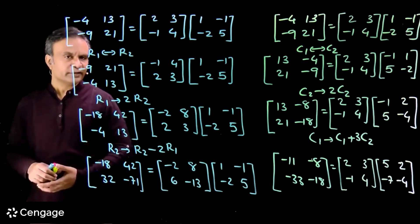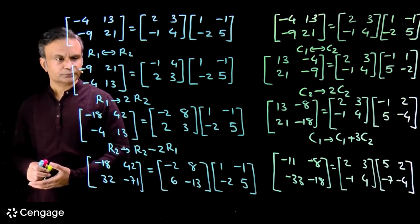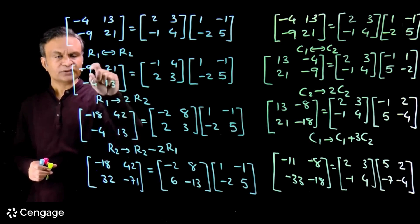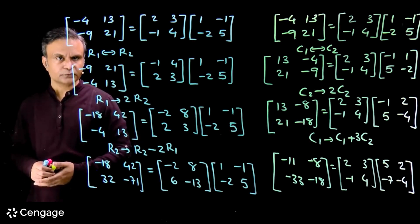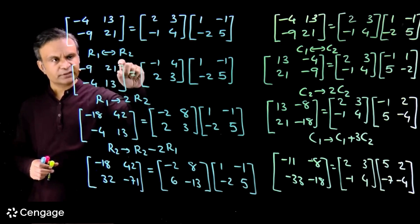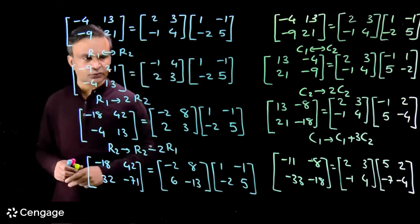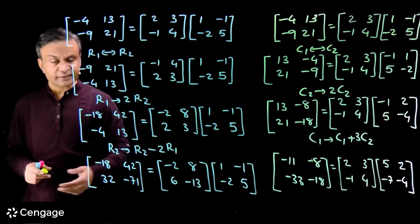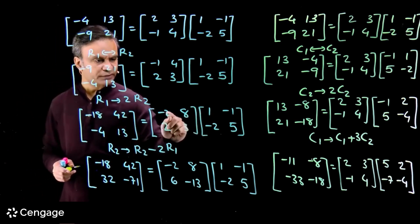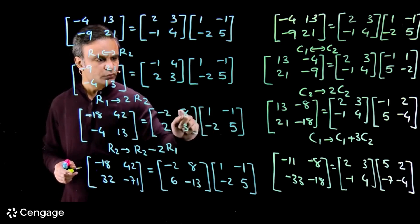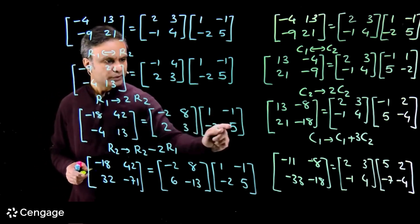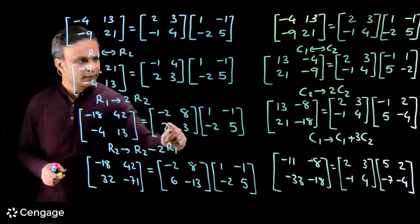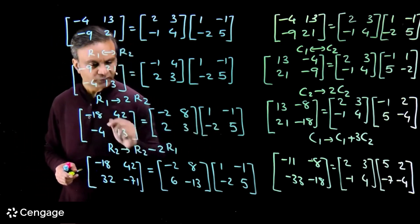Now I am doing one more elementary row transformation — multiplying row 1 by 2 in both matrices simultaneously. So I have this new system. Now again there is one magic: if I multiply these two matrices, I get minus 2 minus 16 = minus 18, 2 plus 40 = 42, 2 minus 6 = minus 4, minus 2 plus 15 = 13.